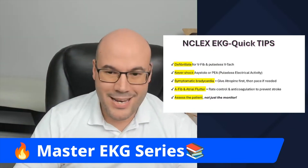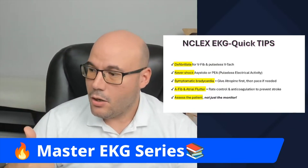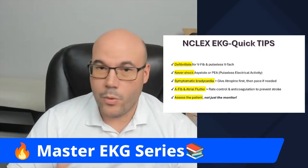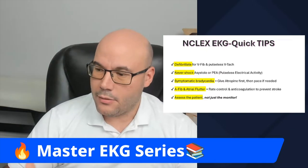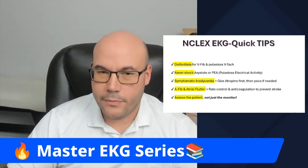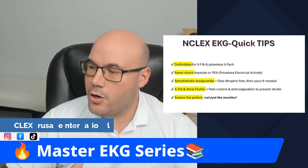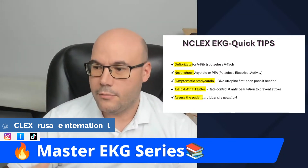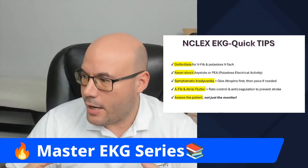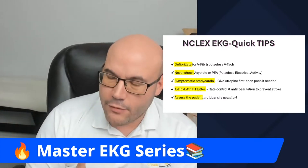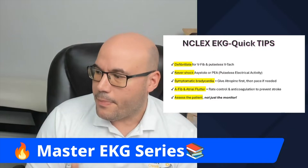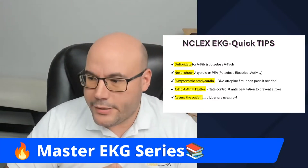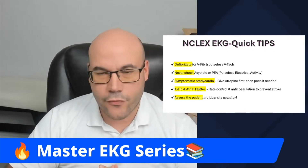Remember, never shock asystole or pulseless electrical activity. Regarding atropine: for symptomatic bradycardia, you give atropine first — pharmacological intervention before shock, before electricity. Give atropine first in symptomatic bradycardia, then pacing if necessary.